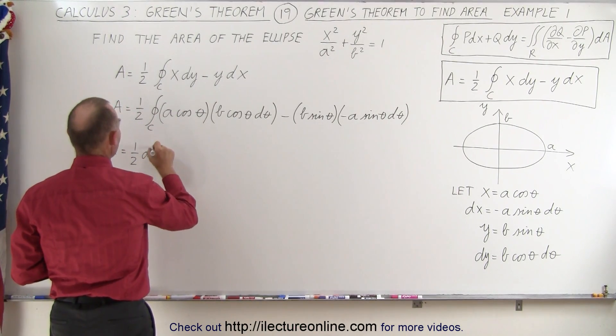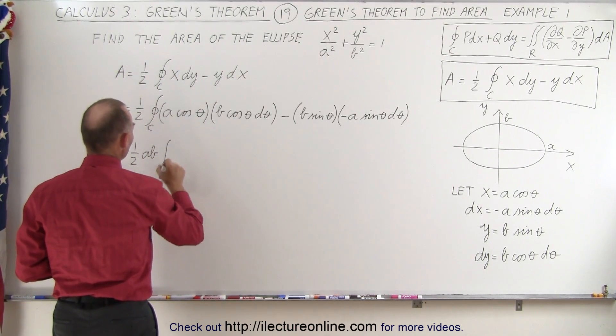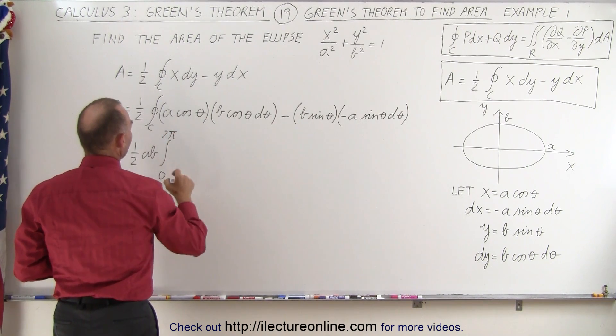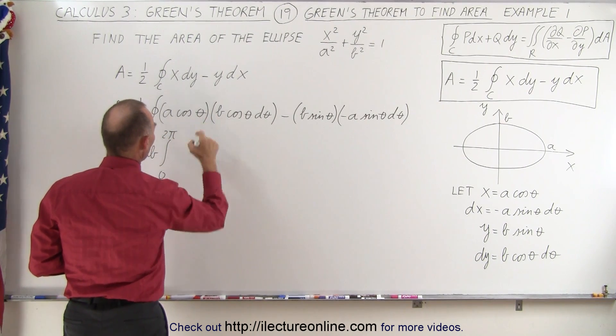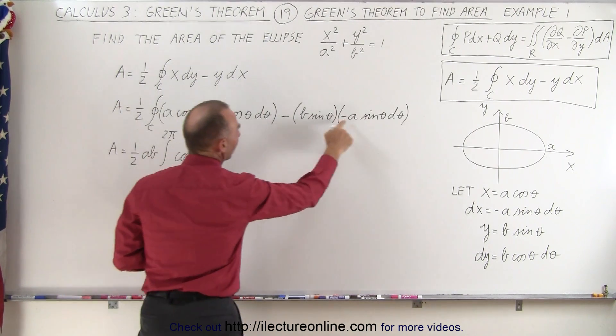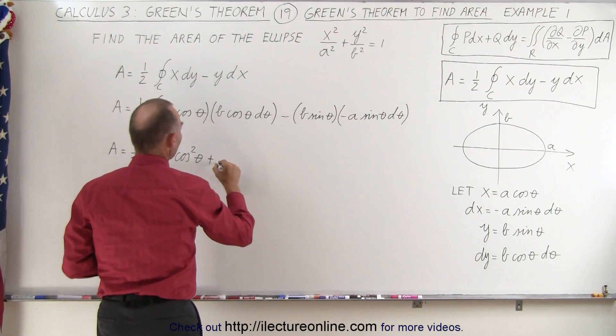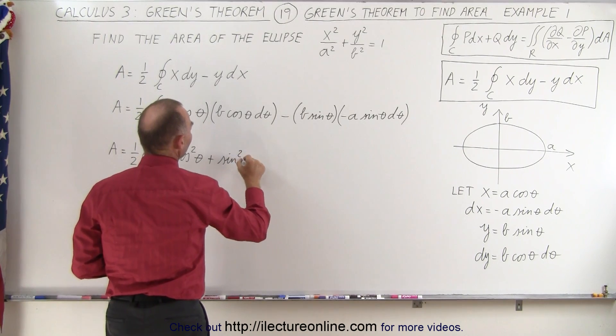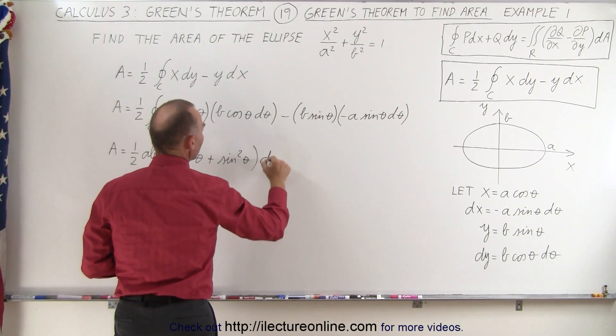So one-half times ab times the integral from zero to two pi, and notice we have the cosine squared of theta plus, because this negates that negative, that becomes the sine squared of theta times d theta.